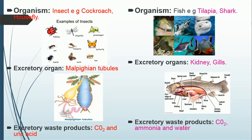The next organism is fish. Examples include tilapia, shark, mackerel, and so on. The excretory organ is the kidney. They can also make use of gills for removing excretory waste products. Excretory waste products include carbon dioxide, which is removed by the gills, ammonia, which is also removed by the gills, and water. However, the kidney can also be used to remove urea.